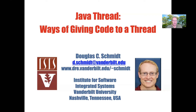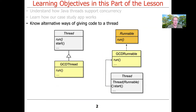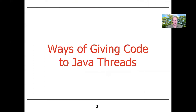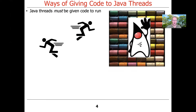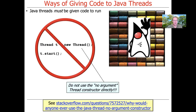The next topic is how to give code to a thread so it can run concurrently in the background. As alluded to in the previous video, there are several different ways of giving code to threads. First and foremost, you have to give code to a thread in order for it to do anything. If you create a thread without giving it anything to do, it won't do anything — even if you start it, it'll just do nothing and return right away.